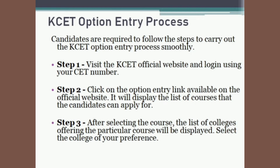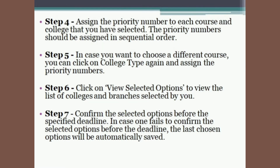After selecting the course, the list of colleges offering the particular course will be displayed. Select the college of your preference. Assign the priority number to each course and college that you have selected. The priority numbers should be assigned in sequential order — for example, assign number 1 to the college and course of your first choice, and so on.